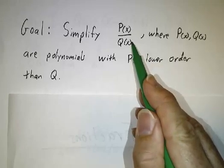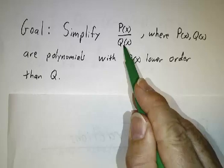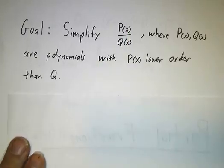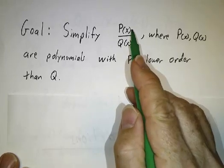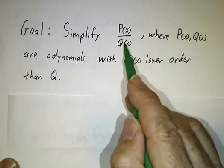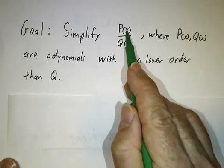I'm going to insist that there be more powers of x downstairs than upstairs. We'll deal later with what happens if you have too many powers upstairs. But for now, we want rational functions with more powers in the denominator than in the numerator.